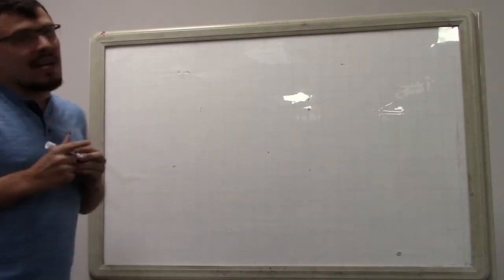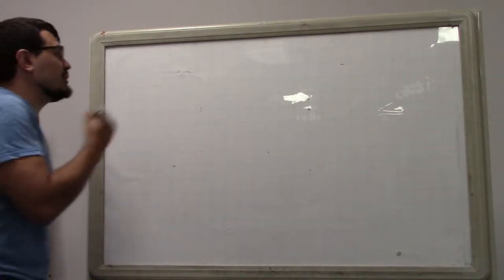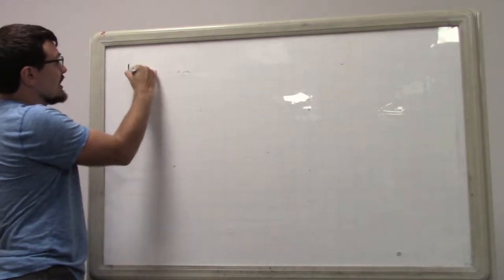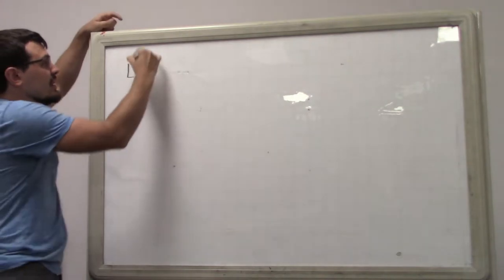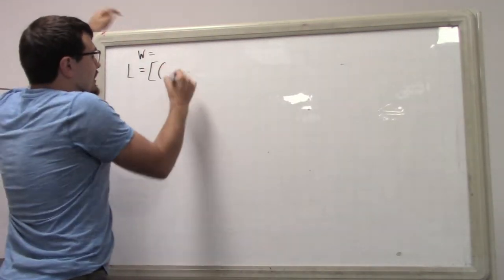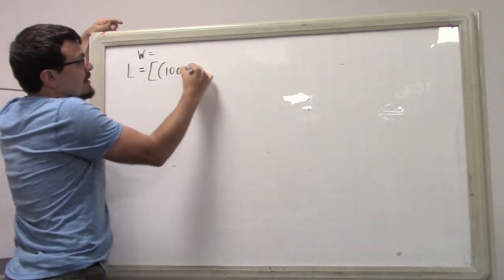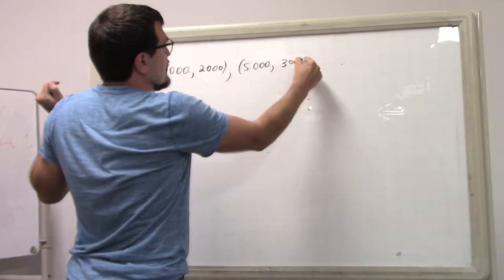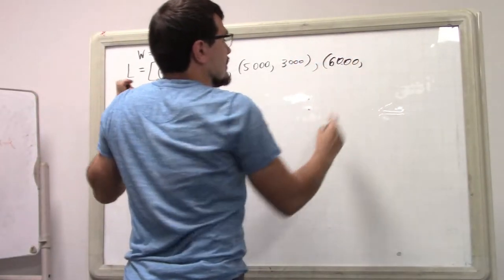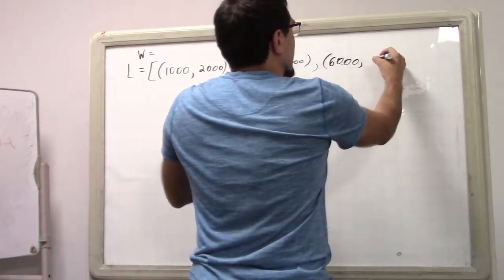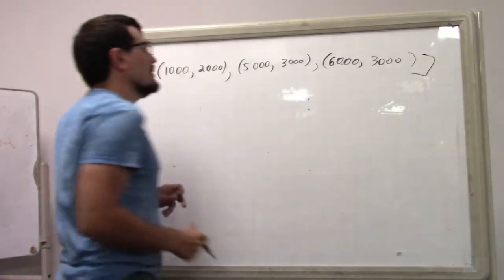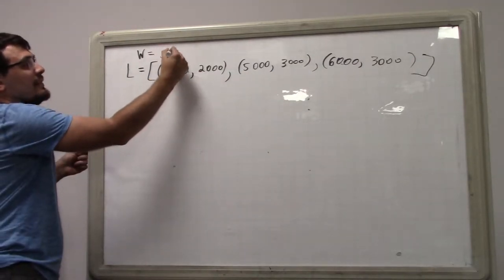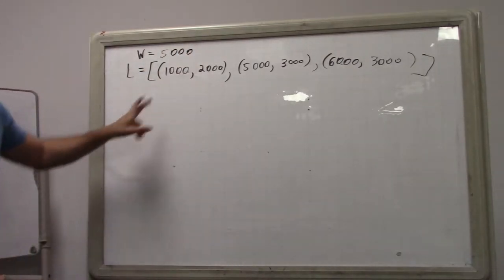Let me motivate how you might find this idea with a particular instance of the knapsack problem. Suppose you have a list where the values are something like 6,000 and 3,000. The weight constraint is 5,000, and the optimal solution is to take those two items.